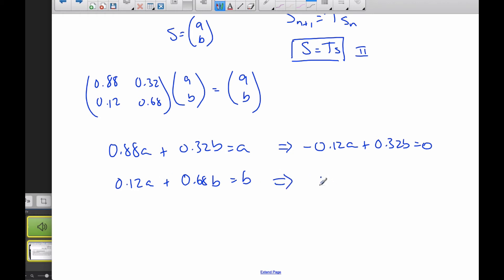When I do the bottom row in this column, I get 0.12A plus 0.68B from those two is equal to B. Again, doing my algebra, I get 0.12A. Subtract the B over, and that's minus 0.32B is equal to 0. Great. I have two equations, two unknowns, and I just can eliminate them. But what do you recognize? This equation is identical to this one.